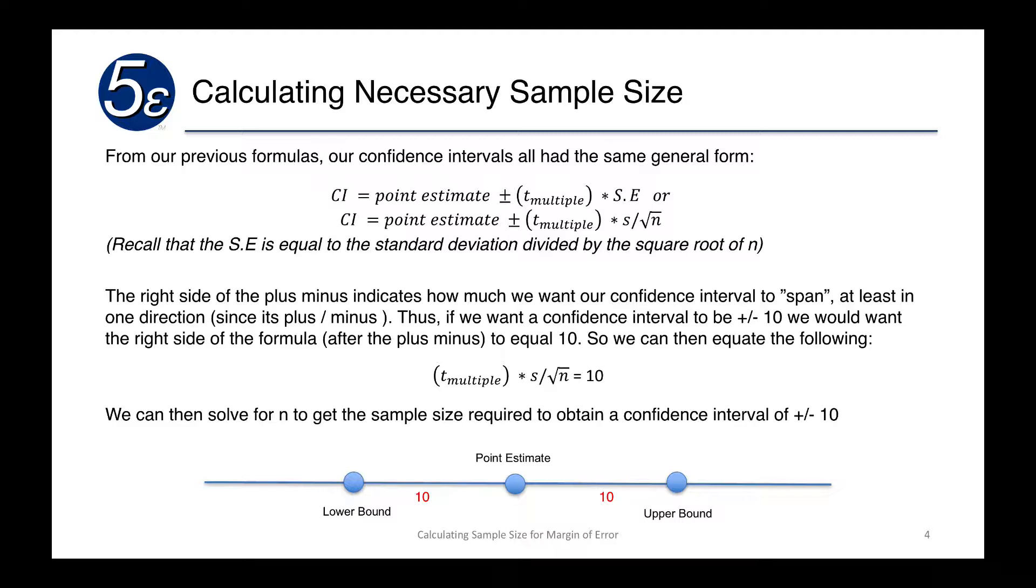So if we want a confidence interval to be plus or minus 10, we would want the right side of that plus and minus to equal 10. And therefore, we can actually create the following equation.